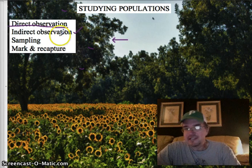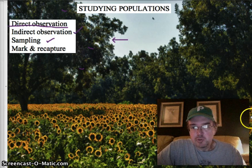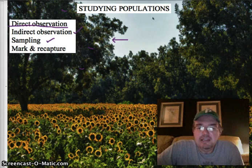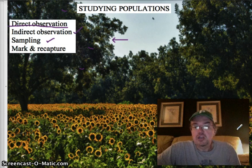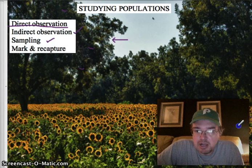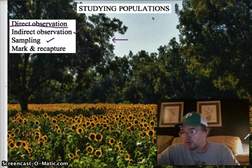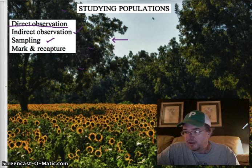Another method is called sampling, and sampling is a pretty good way to do things. With this field of sunflowers, if you were to know how big the entire field is and count just the sunflowers in, say, one one-hundredth of that area — in this little box right here — and then multiply that count by 100, you could get a rough estimate, or approximate number based upon reasonable assumption, of how many sunflowers are in the field.